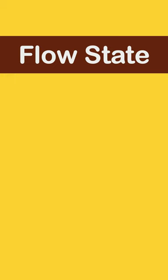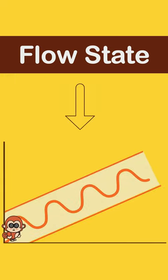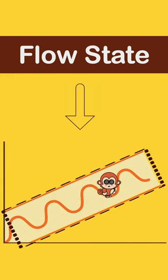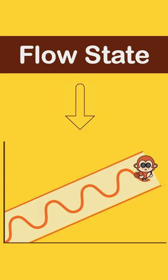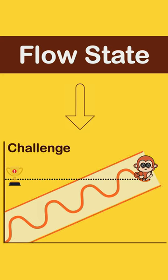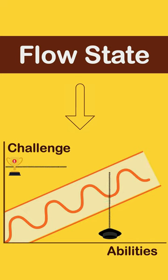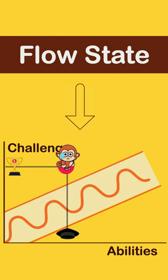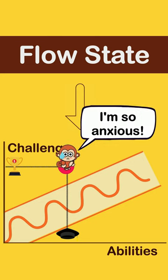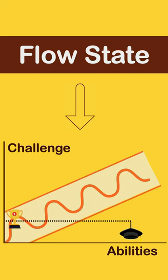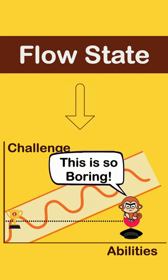Such a flow state can be experienced under the right conditions. Mainly, there needs to be a perfect balance between the challenge we are facing and our ability to perform the activity. When the challenge is too high in comparison to our abilities, we might experience anxiety, anger, and frustration. On the other hand, when the challenge is too low, we might get bored.